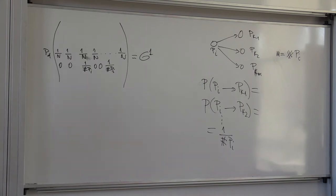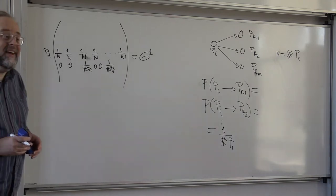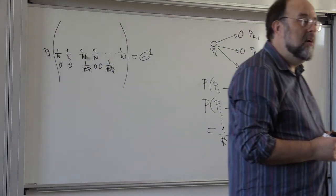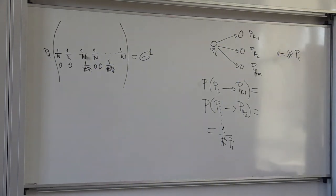A student asks: previously, if it's a dangling node and you're not really pointing to anything, it would just be a whole row of zeros — the probability of pointing to anything else would be zero. The answer is: that's correct. So we are now tweaking the model.